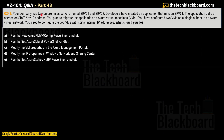Moving on to question number 242: your company has two on-premises servers named SRV01 and SRV02. Developers have created an application that runs on SRV01, and the application calls a service on SRV02 by IP address. You plan to migrate the application to Azure virtual machines. You have configured two Azure VMs on a single subnet in an Azure virtual network. You need to configure both VMs with static internal IP addresses. What should you do?